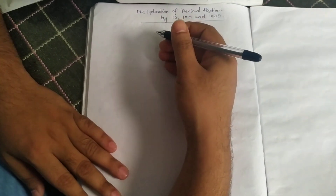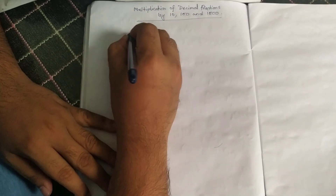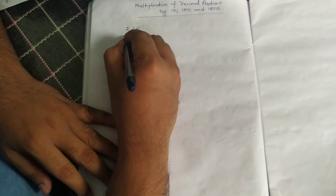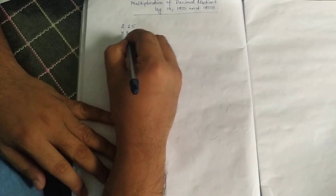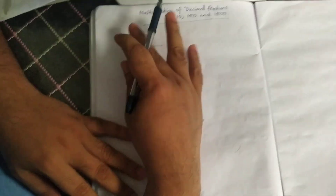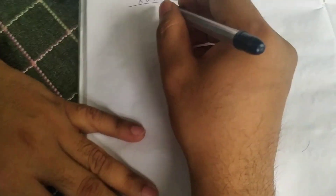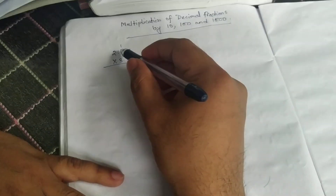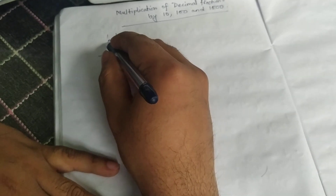I'll just repeat one example so that you can have a clear idea again. For example, let's say 2.65 into 3.32. How to multiply this? It's very easy. First of all, we follow the normal multiplication process: five twos are ten, one carry; two sixes are twelve plus one, thirteen, one carry; two twos are four plus one, five.